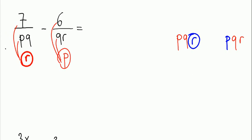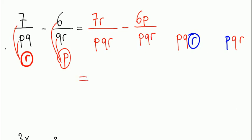Then I'll write 7 times R over P times Q times R, minus 6 times P over P times Q times R. Now they have the same common denominator, which is PQR, and 7R minus 6P will be our answer.